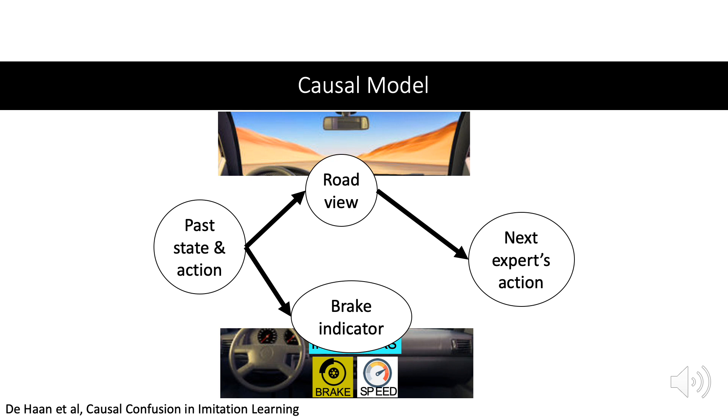Now if we learn an imitator, we can learn one with a causal graph that just uses the true cause, corresponding to task B. Or we learn with a graph that wrongly treats both variables as a cause, corresponding to task A. Or with a graph that ignores the true cause altogether.